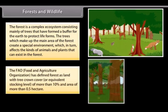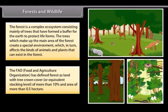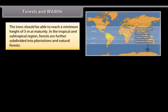The FAO (Food and Agriculture Organization) has defined forest as land with tree crown cover or equivalent stocking level of more than 10 percent and area of more than 0.5 hectare. The trees should be able to reach a minimum height of 5 meters at maturity. In the tropical and subtropical region, forests are further subdivided into plantations and natural forests.